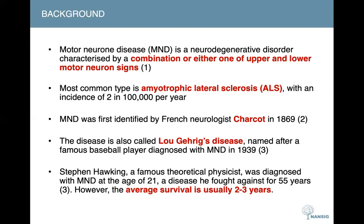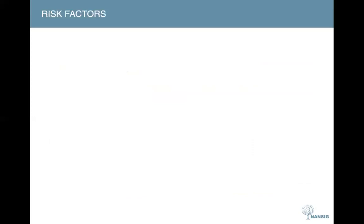A quick fact about the disease: Stephen Hawking was actually a rare case, as he lived for decades. The average survival is two to three years from diagnosis, and some presentations have an even shorter prognosis, such as those with bulbar respiratory presentations.